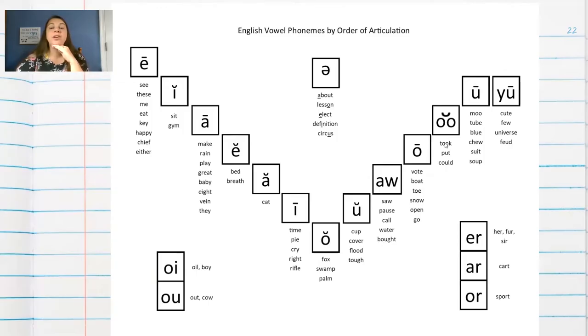Like in took. Then we have oo, like tube and ū, like cute. See how my chin comes way up and my mouth sort of comes forward and the sound comes back in my mouth.